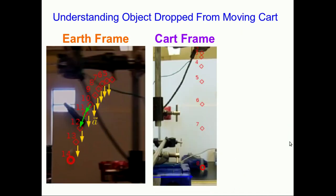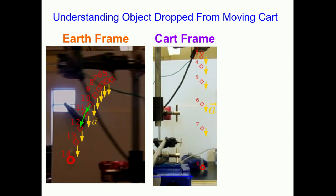Let's understand this result in terms of things we've seen earlier in the course. Remember that in the cart frame, an observer sees this object move straight down, and they see it move straight down speeding up. So for them, the acceleration points straight down. But all inertial observers always agree on measurements of accelerations, and so the person in the earth frame has to get the same result — the acceleration is straight down.